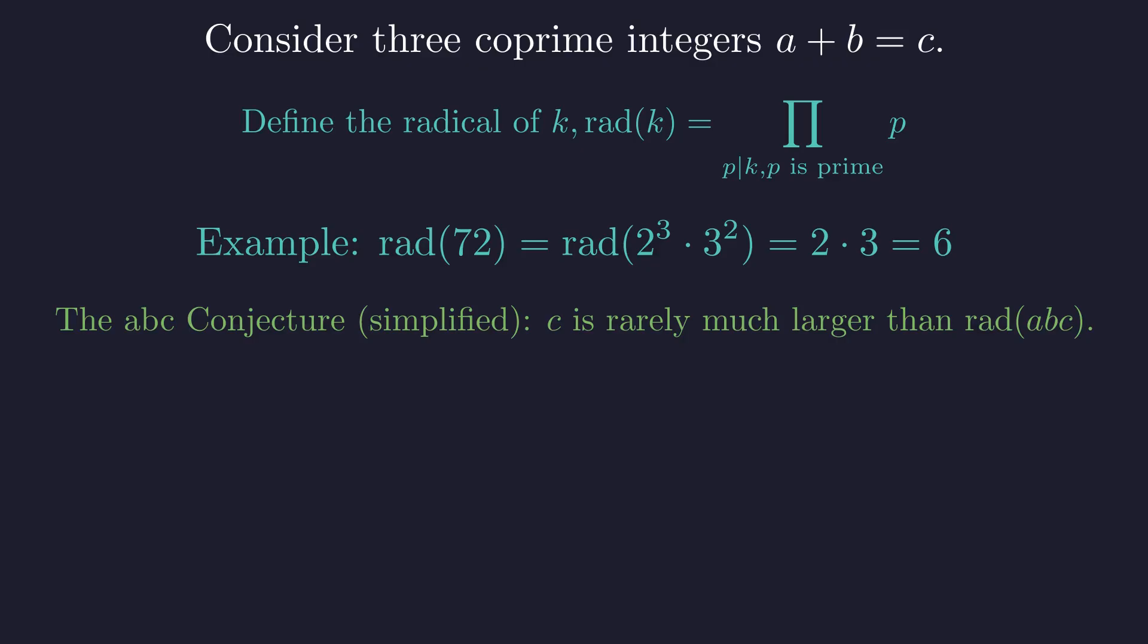The a, b, c conjecture states, in simple terms, that c is rarely much larger than the radical of the product a times b times c. Numbers with small radicals are called smooth. The conjecture implies that the sum of two numbers can't be too smooth.